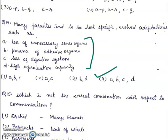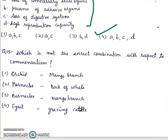Question 15: Which is not the correct combination with respect to commensalism? Orchid mango branch, barnacles back of whale, barnacles mango branch, egret grazing cattle. Right answer will be third.